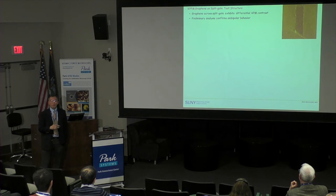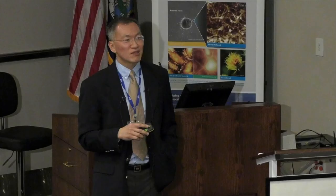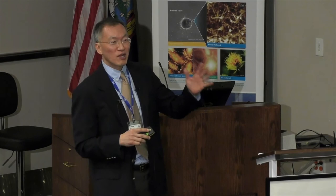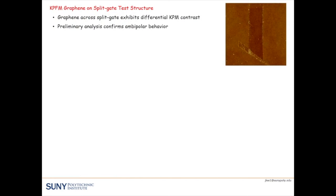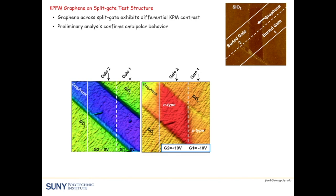Since this symposium is about SPM, let me describe how SPM helps our studies — taking a detour to analyze a graphene p-n junction. Here's an AFM image of exfoliated graphene from some of our earliest graphene work. The monolayer sits over buried gates, but you can't see them in the topographical image because we used our 300mm line to polish the surface.